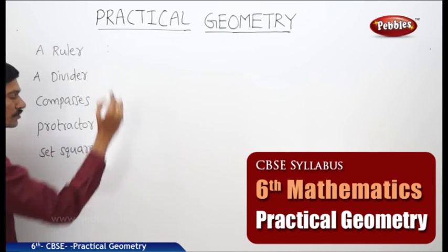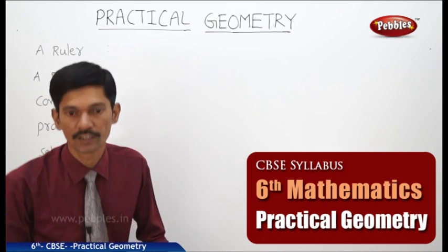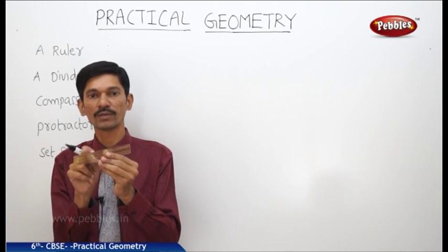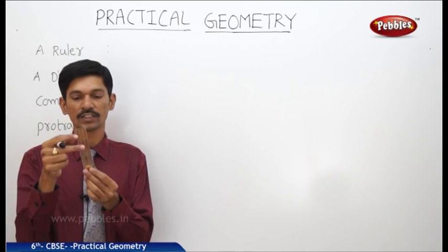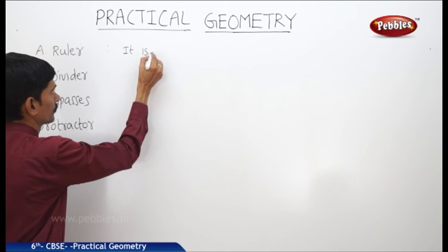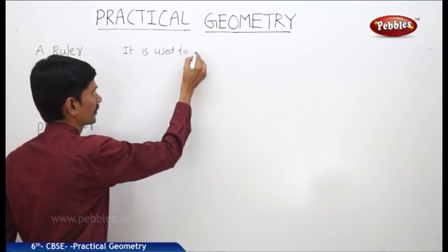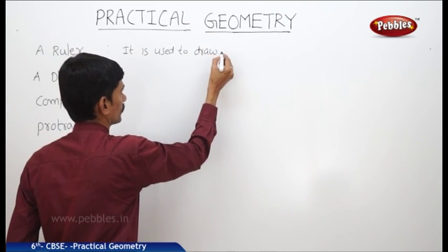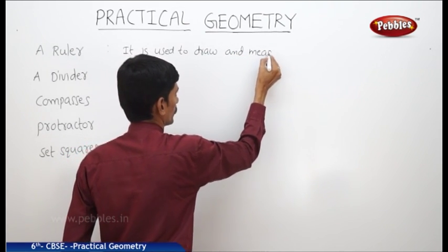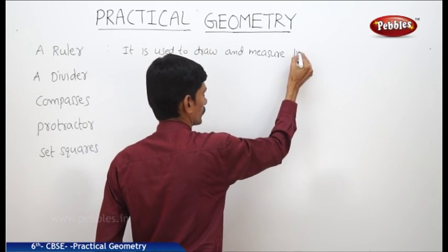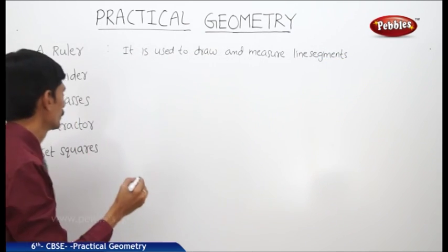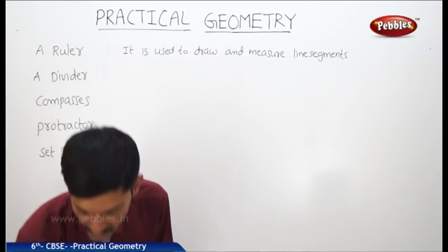First, a ruler. The ruler has two straight edges. On one of the straight edges, the centimeters and millimeters are marked. On the other edge, the inches are marked. This ruler is used to draw and measure line segments.